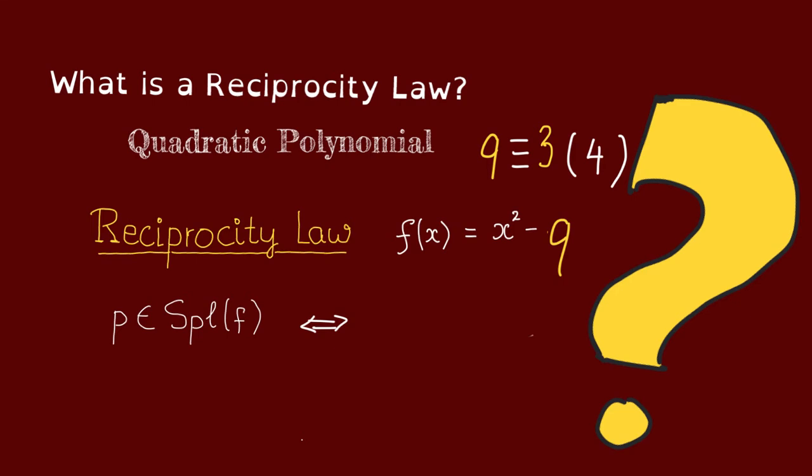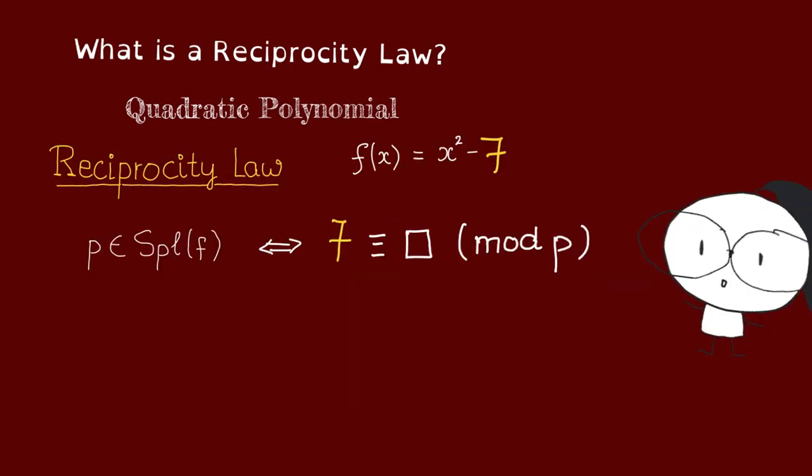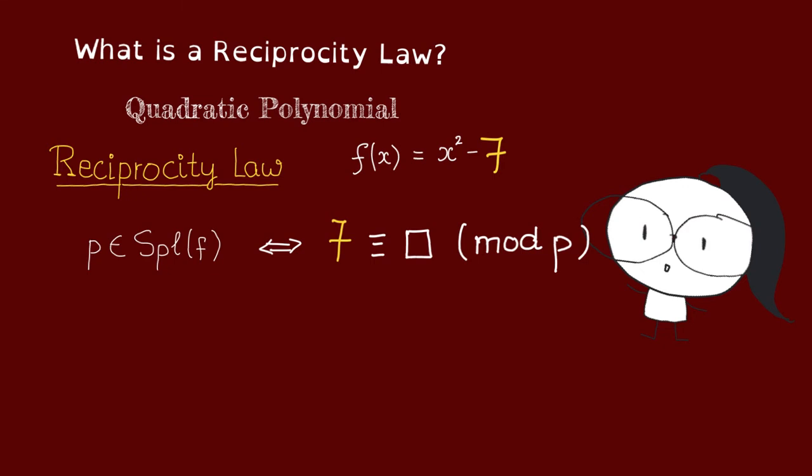Now, what about if q is 3 mod 4? Let's work out an example. Let's say q is 7. As before, we know that f split over p if and only if 7 is the square mod p.